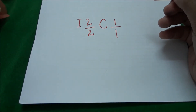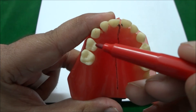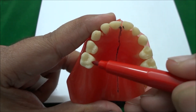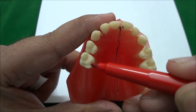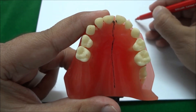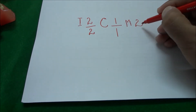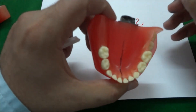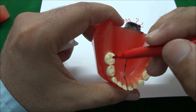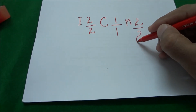Next to the canine we have molars. In the right maxillary quadrant, this one is the first maxillary molar and this one is the second maxillary molar, so we have two molars. We will write M for molar and in the maxillary quadrant we have two. In the mandibular quadrant we also have a first molar and a second molar, so in the mandibular arch we have two molars as well.